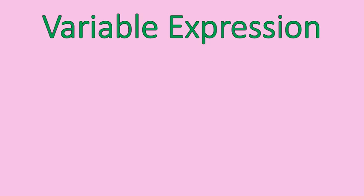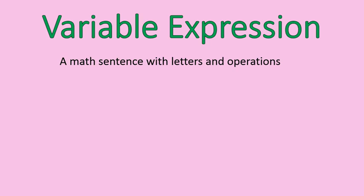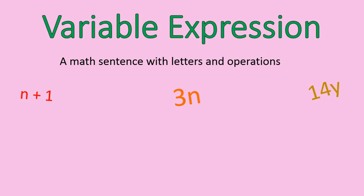So let's talk about a variable expression. A variable expression is basically a math sentence that has letters and operations. Letters can be any letter of the alphabet. We tend to avoid the letter i and the letter e, and there are some other letters used for other math reasons, but you can use pretty much any letter you want to represent a number. Here's an example: n plus one. n is a very common variable because it stands for number — some number plus one. This is a number times three; that's multiplication when numbers are written right next to the letters like that.